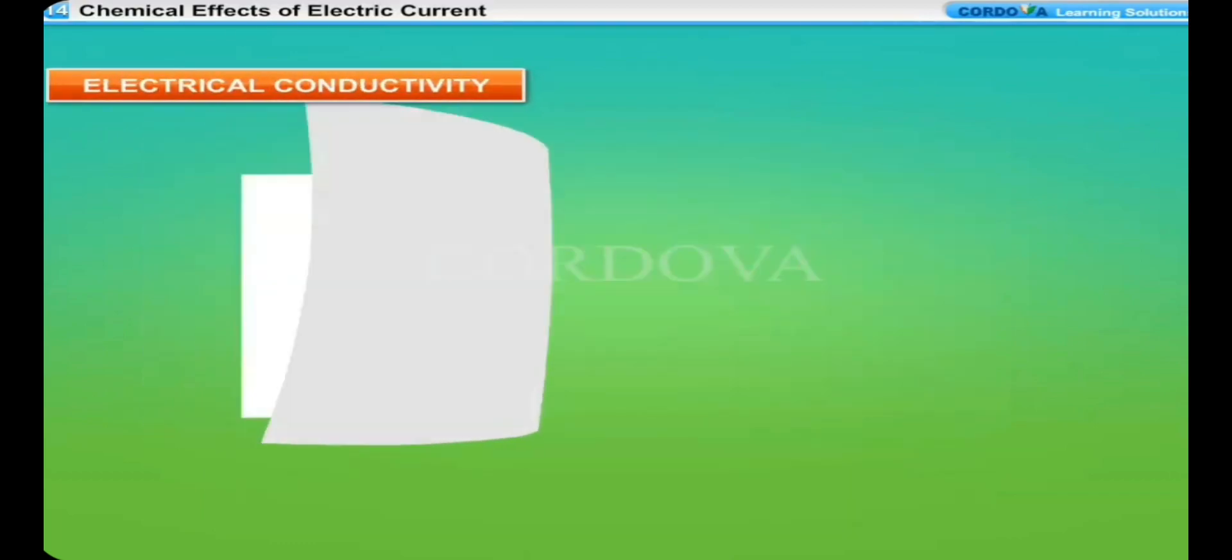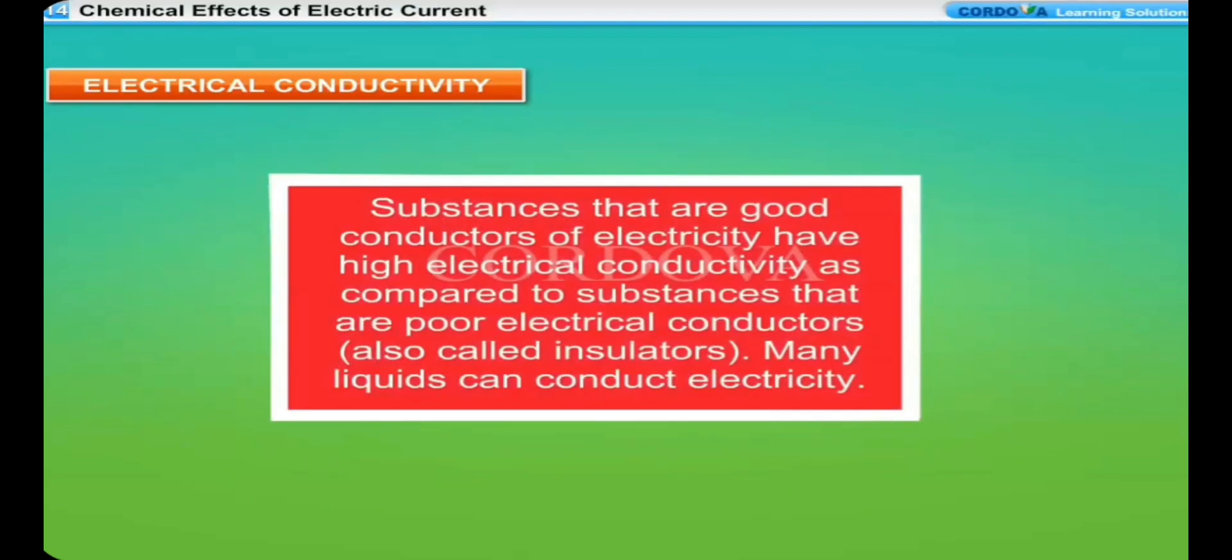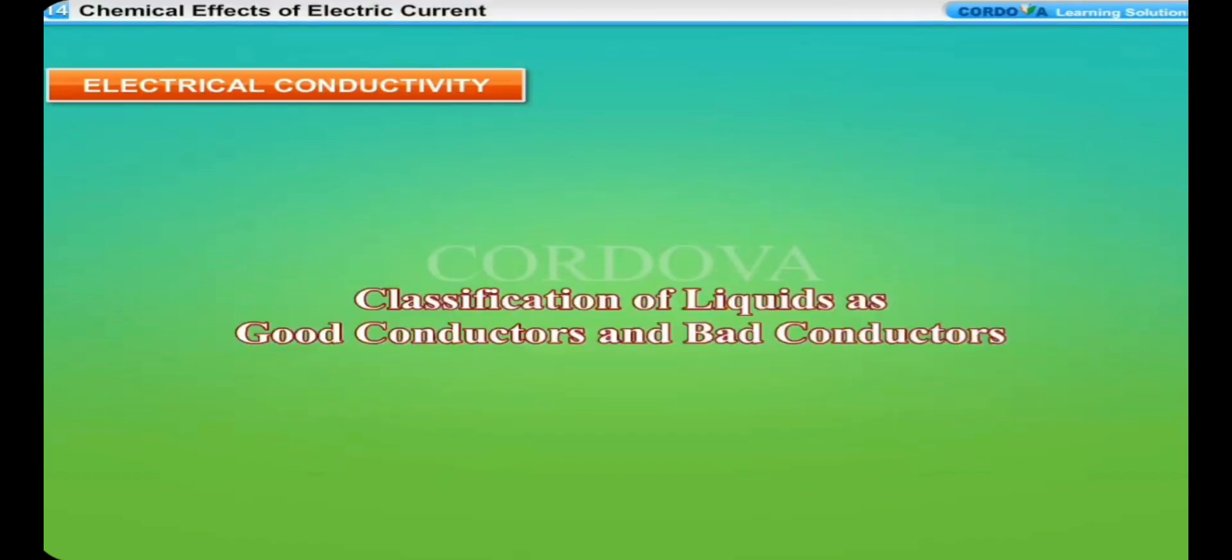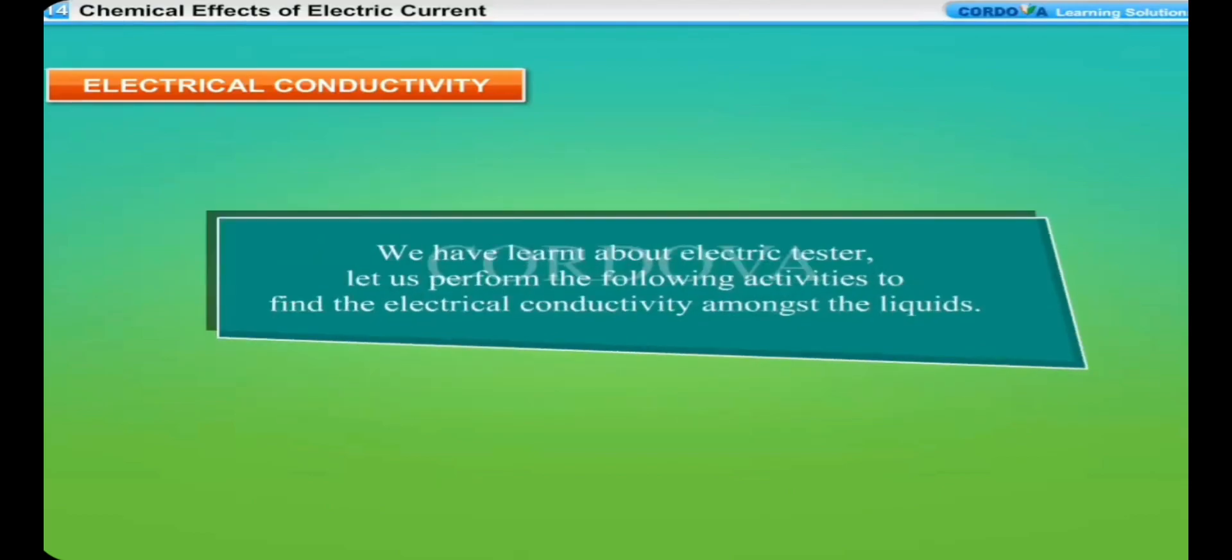Electrical conductivity. Electrical conductivity is a measure of the ability of a substance to carry electric current. Substances that are good conductors of electricity have high electrical conductivity as compared to substances that are poor electrical conductors, also called insulators. Many liquids can conduct electricity. Classification of liquids as good conductors and bad conductors: We have learnt about electric tester. Let us perform the following activities to find the electrical conductivity amongst the liquids.